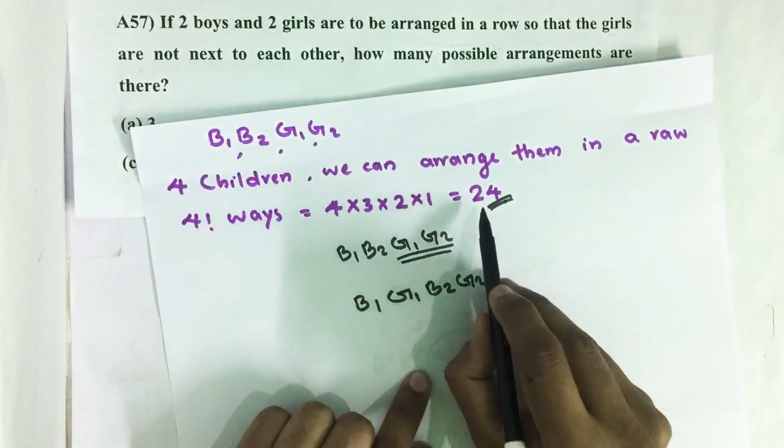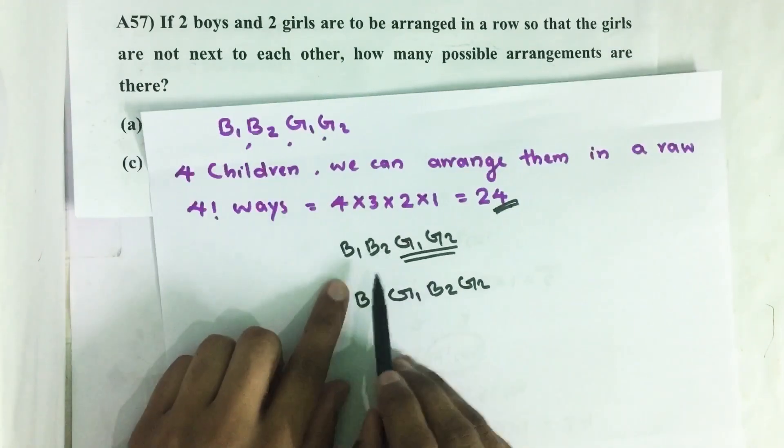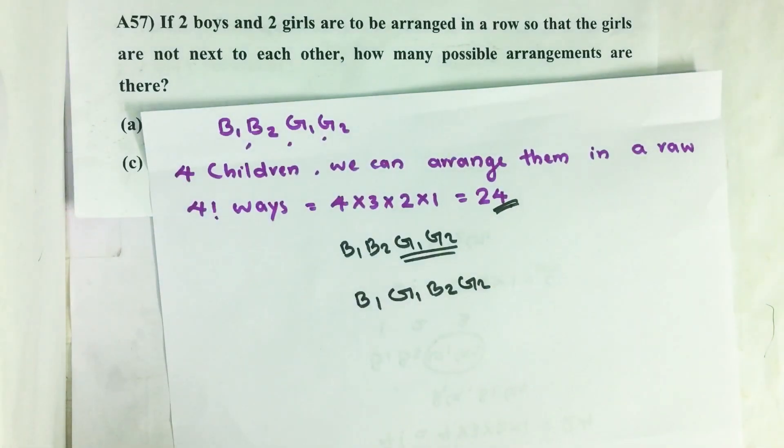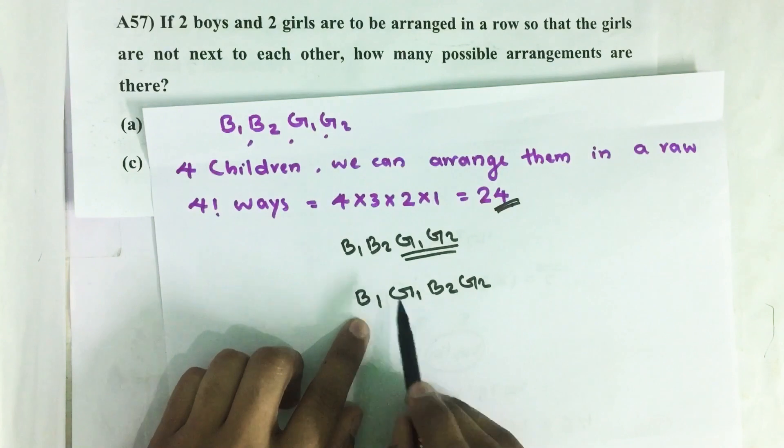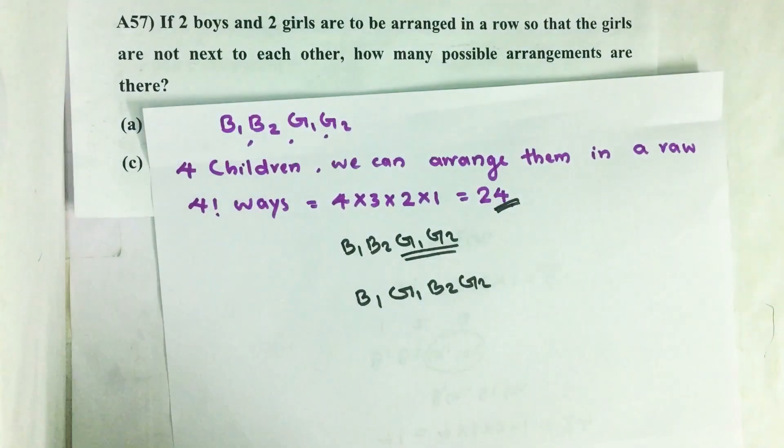So arrangements allowed are B1, G1, B2, G2, where girls are not next to each other. Total number of arrangements possible is 24. From this we have to remove those arrangements within that girls are next to each other.